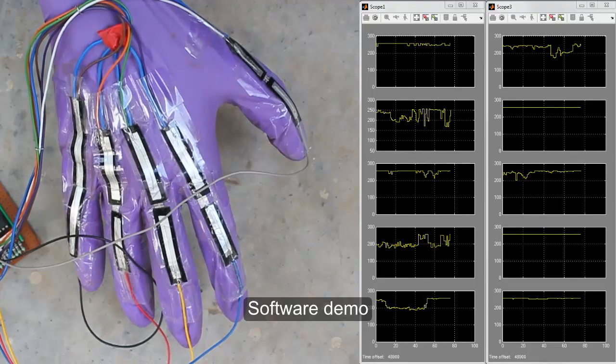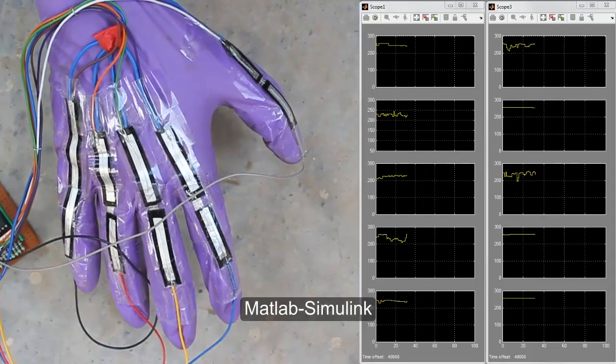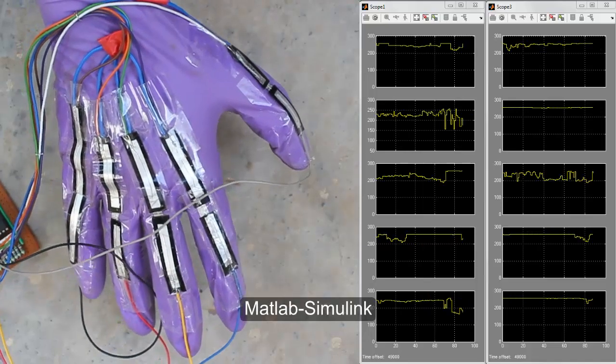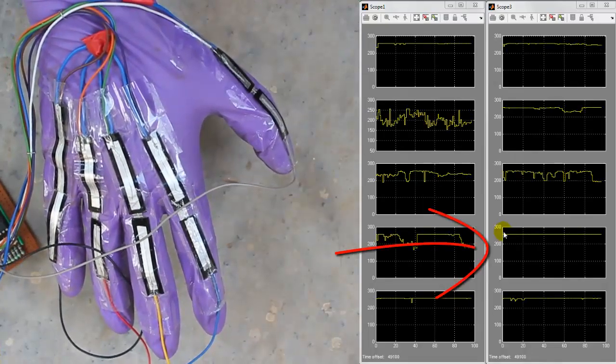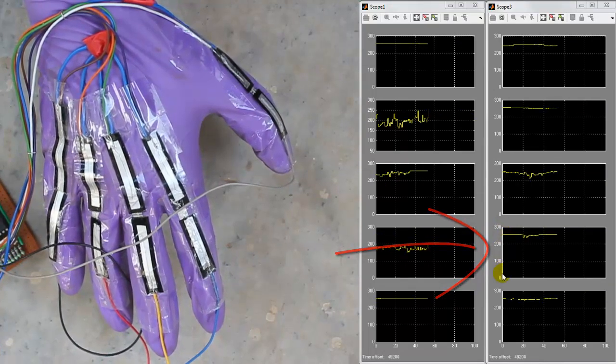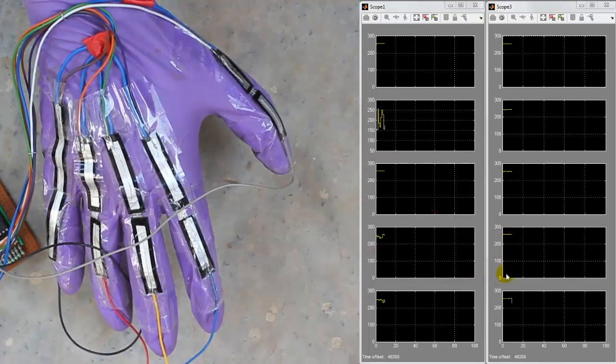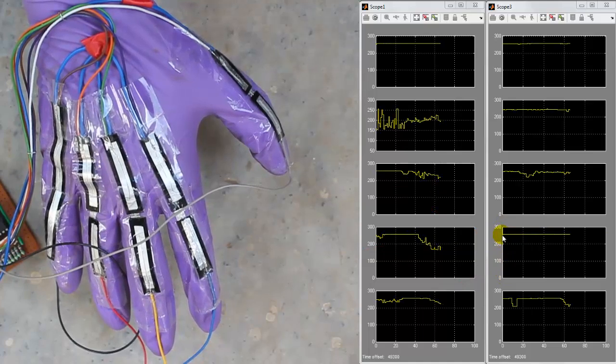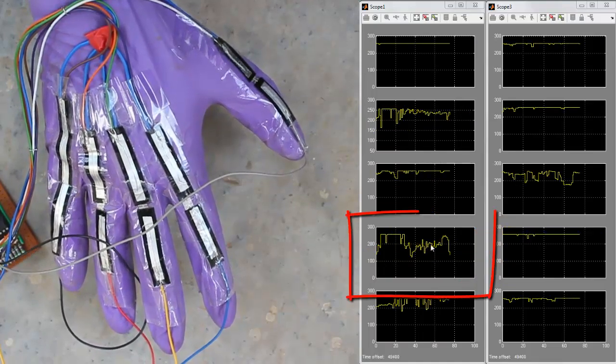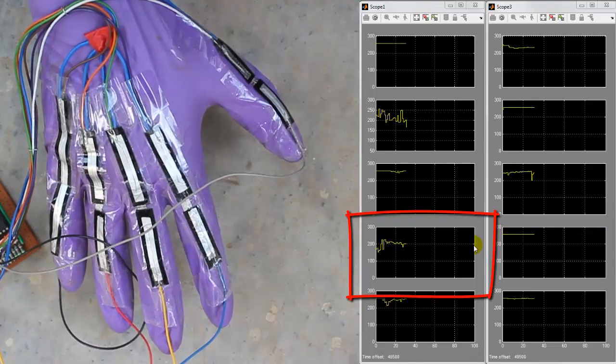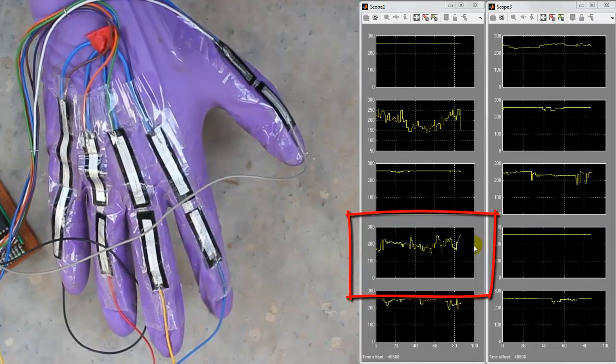We shall now demonstrate our algorithm to process sensor data using MATLAB. The scopes on the screen correspond to the voltage across the sensors. The value for each sensor ranges from 0 to 255. In the relaxed position, we have all the sensor values above 200. Now we will bend one finger and observe the change in the scope.